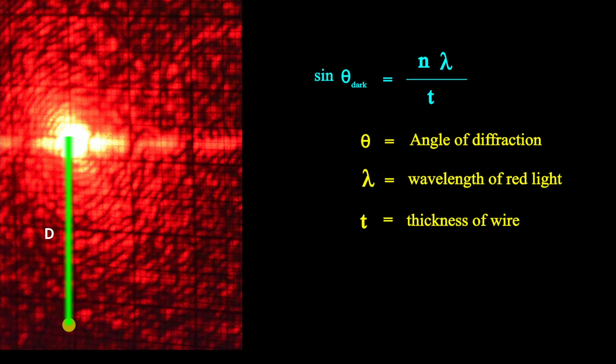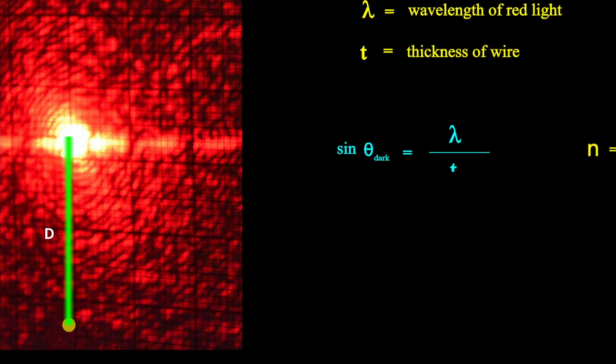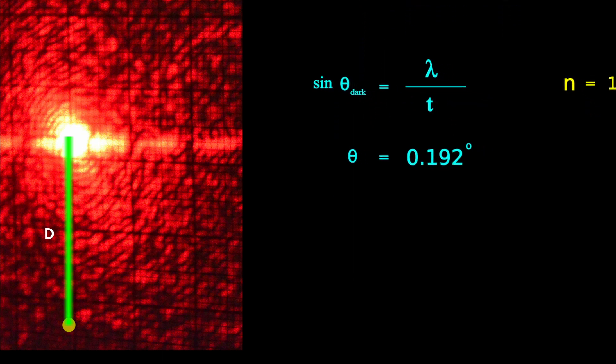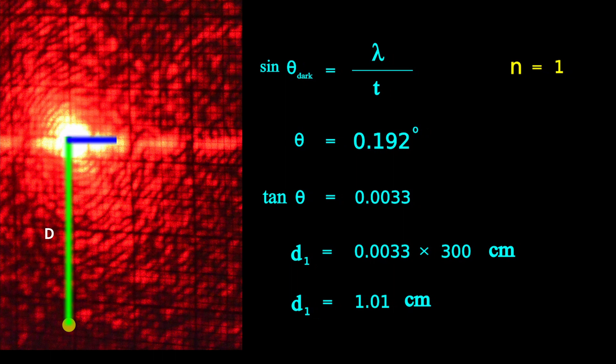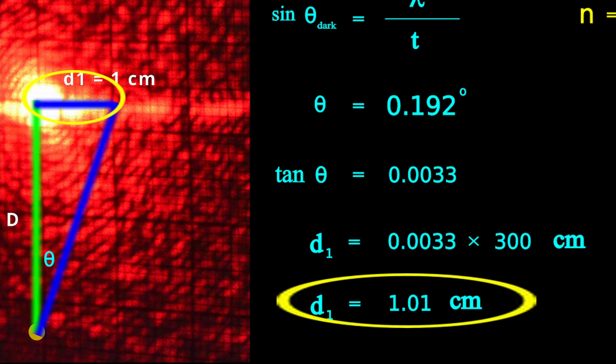For n equals 1, that is first destructive interference from the center, we get the value of 1.01 cm. Which means, first dark fringe will appear at 1 cm from the center. We are quite close, as can be seen.